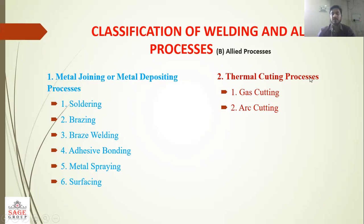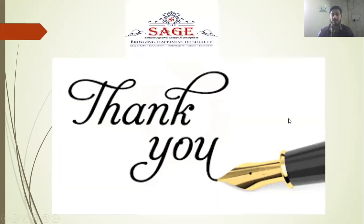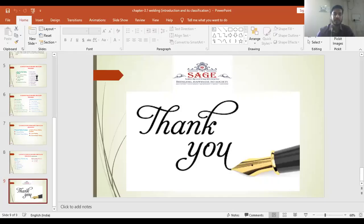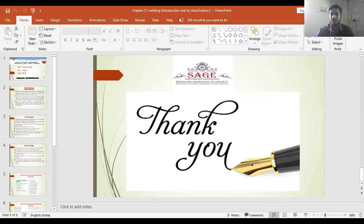In the metal joining or metal deposition processes, the allied processes include soldering, brazing, braze welding, adhesive bonding, metal spraying, and surfacing. Gas cutting and arc cutting are the thermal cutting processes. So these cover the basic introduction, classification, advantages, and disadvantages of welding. Thank you so much for listening. I hope you have enjoyed this and received some important knowledge regarding this topic.